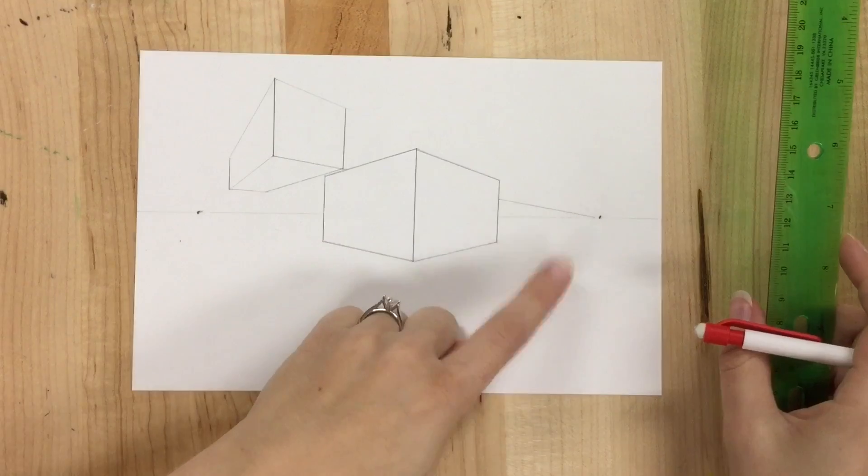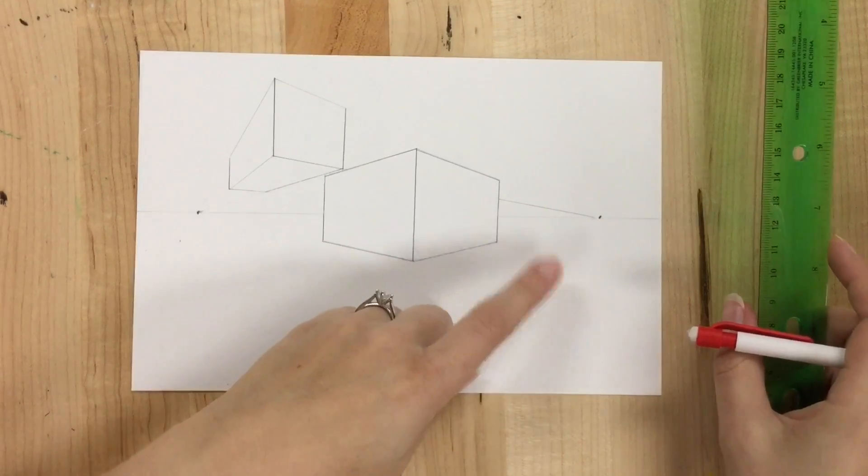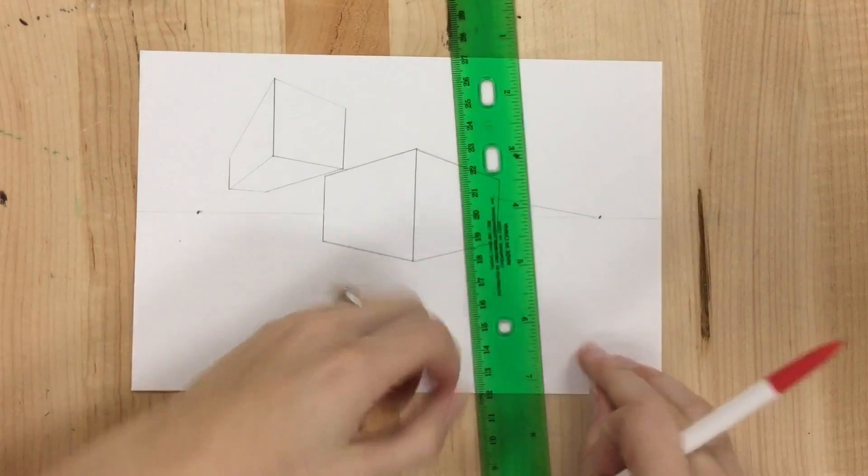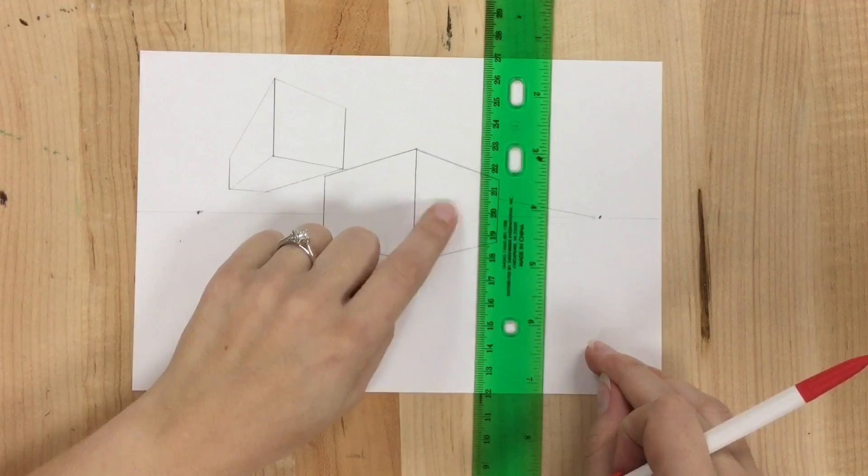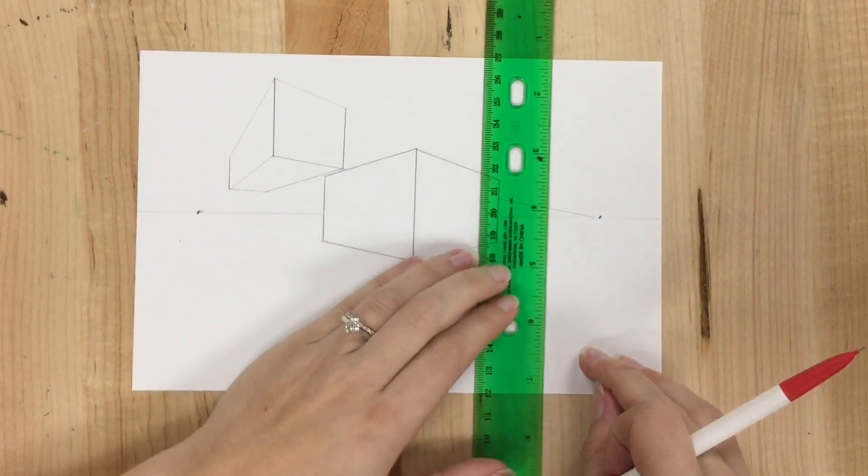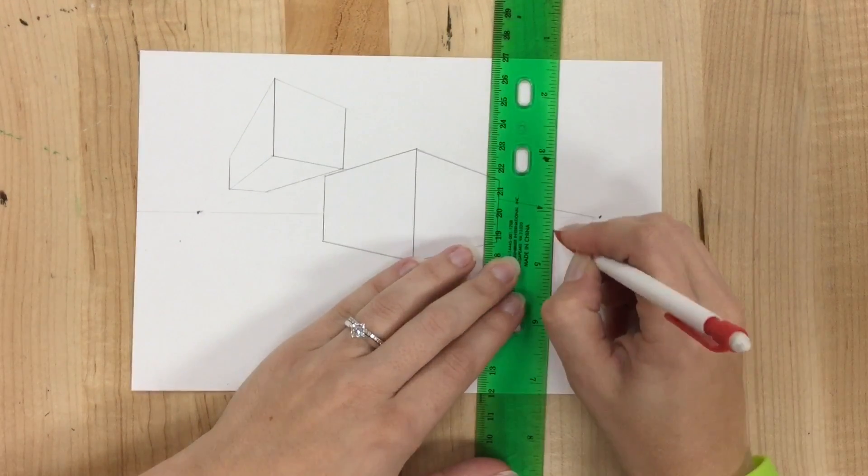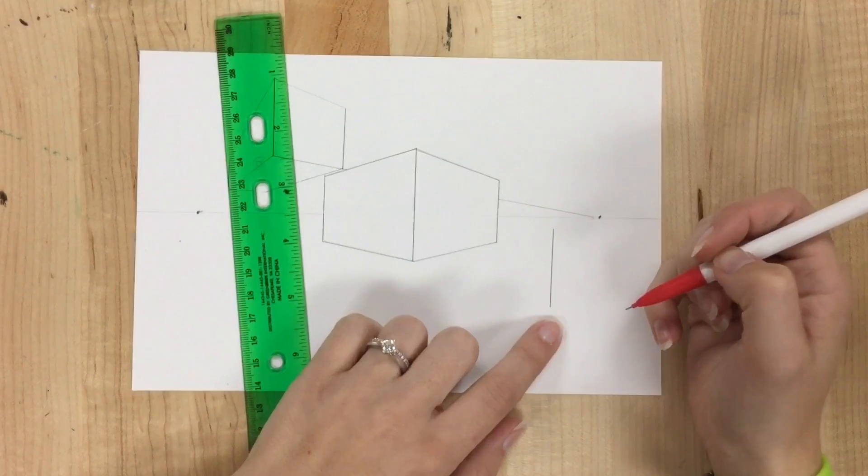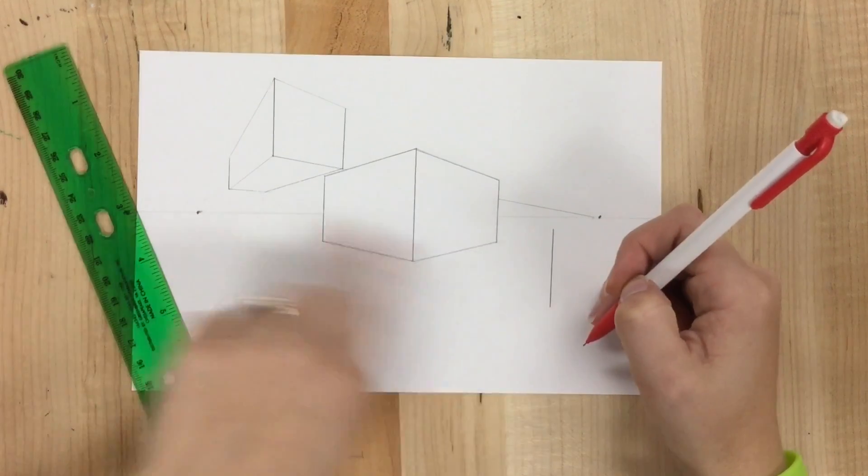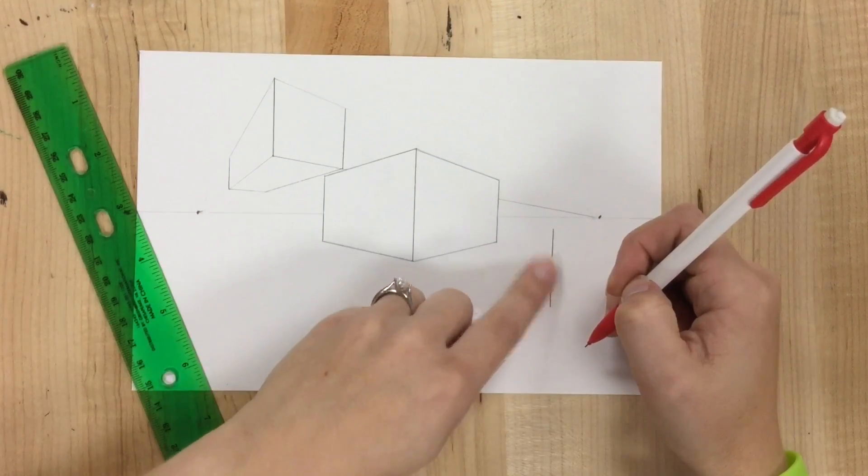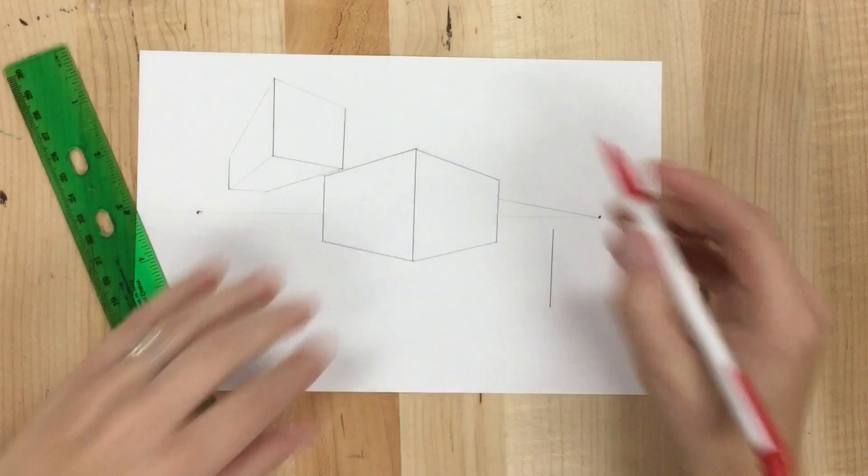I'm going to do one down here now below the horizon line. I'm going to put it kind of close to this shape because I'm going to show you what happens when I go behind. So I start with my corner. Next step is the same. Connect my corner top and bottom to each vanishing point.